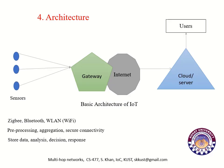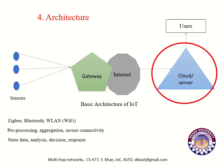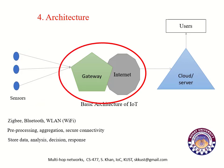Architecture of Internet of Things: the basic architecture is shown in a diagram. You can see there are three sensor nodes. These sensor nodes are connected with the cloud or server through the gateway. The gateway provides internet connectivity to the sensors. These sensors use Zigbee, Bluetooth, WLAN, or Wi-Fi mechanisms to connect with the gateway.